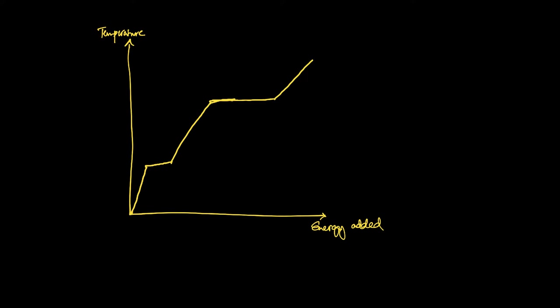Let's name some sections of this graph: points A, B, C, D, E, and F. Between A and B, you're adding energy to this substance and the kinetic energy of the particles is increasing. An increase in temperature leads to more motion of the particles — the vibrational energy increases, causing the kinetic energy to rise. So kinetic energy goes up between points A and B.